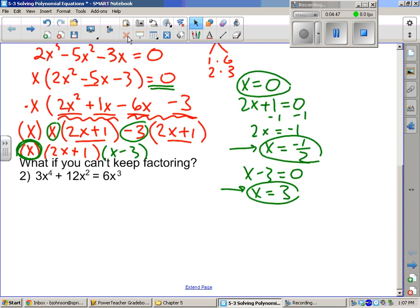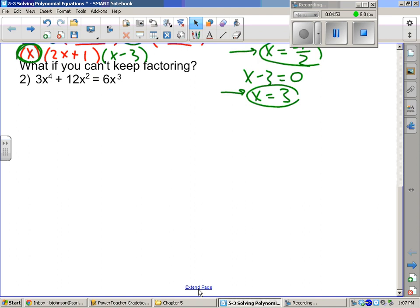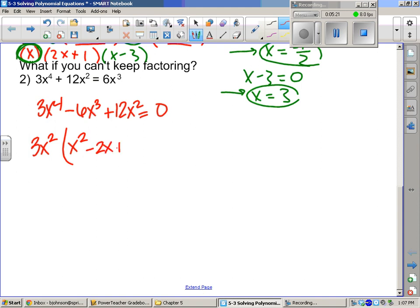This next one. What if you can't keep factoring? We need to have it in standard form. So I'm going to move the 6x³ over. And I'm actually going to put it in the middle so I have standard form. This time I see that I have a greatest common factor of 3. And it's actually going to be 3x² that I take out. That's common in everything. And I go back and divide those. This will turn to 2x², that will be a -2x and then a +4 equal to 0.